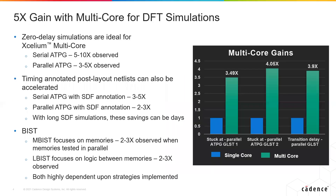What kind of results can we expect with Accelium multi-core? The results break into three different regions. Early in the design cycle, you will do simulations with zero delay to check your patterns. These zero-delay simulations are ideal for Accelium multi-core because when that active edge hits, most flops need to be recalculated, along with the combinational logic between them. For serial ATPG, we can see 5 to 10x acceleration over a traditional Accelium single-core solution. Parallel ATPG, because it has a slightly higher testbench overhead and skips some events, sees about 3 to 5x acceleration over Accelium single-core.